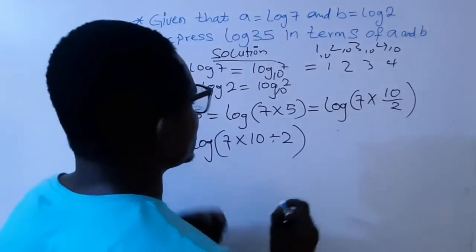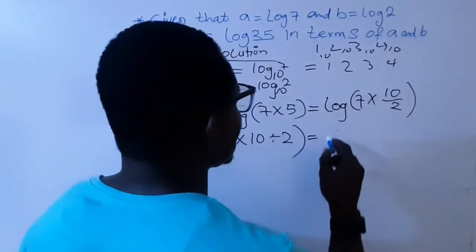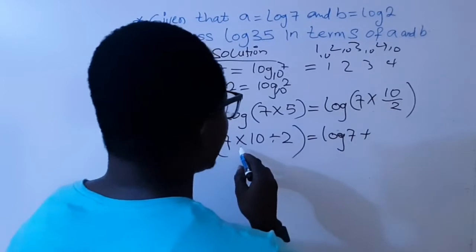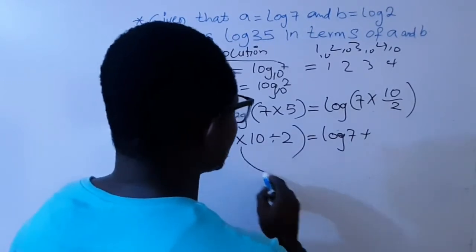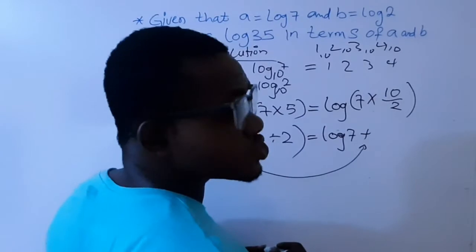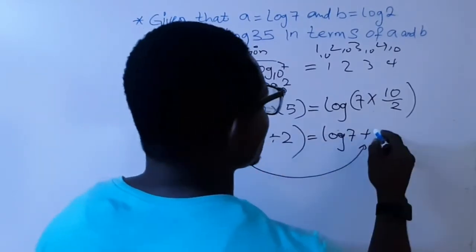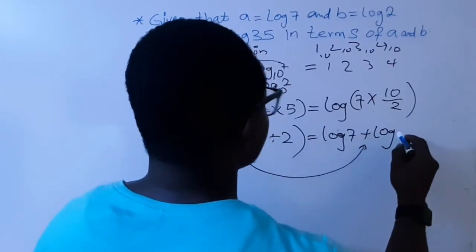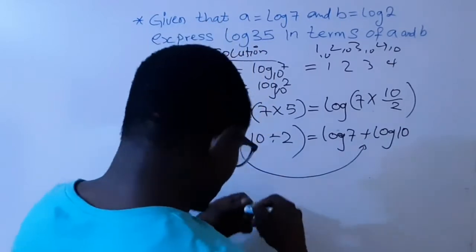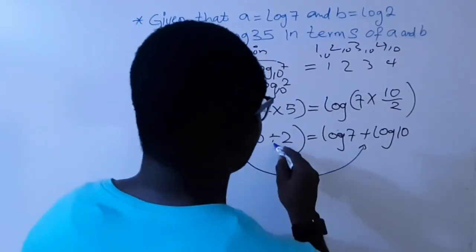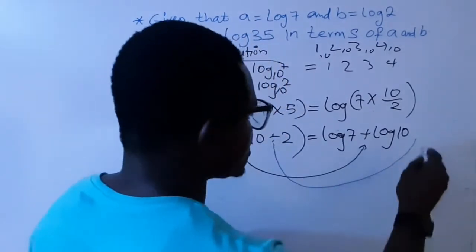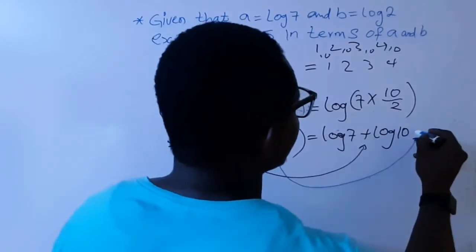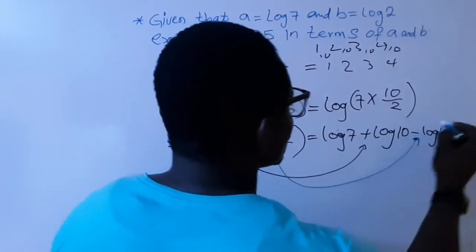Now let's translate this one. It means that I can write it as log 7 plus, I'm transferring, changing this one to addition. Then log 10, then I'm transferring this sign to negative. So it will become minus log 2.